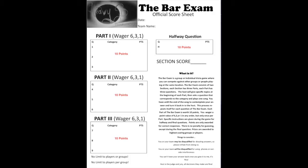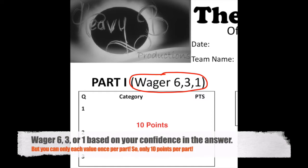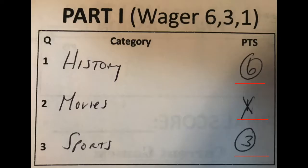Each part of the Bar Exam is worth 10 points. When a question is asked, you'll assign a point value of 6, 3, or 1, based on your confidence in that answer. But you can only use each value once per part.